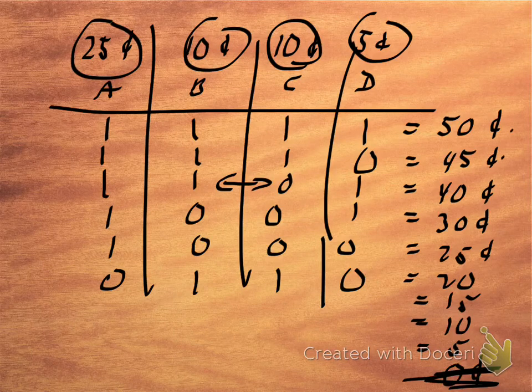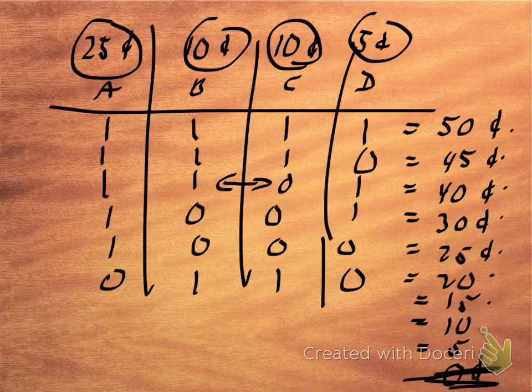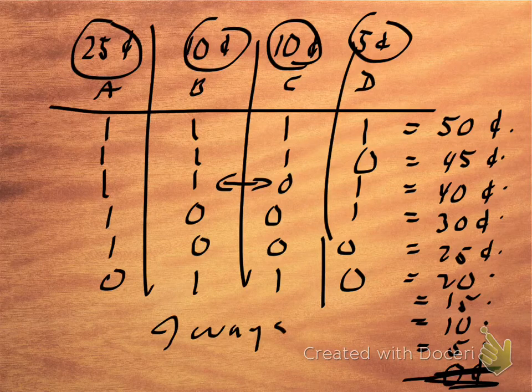So the total different combinations is 1, 2, 3, 4, 5, 6, 7, 8, 9. And again, if we're very systematic, we can keep track of all of them.